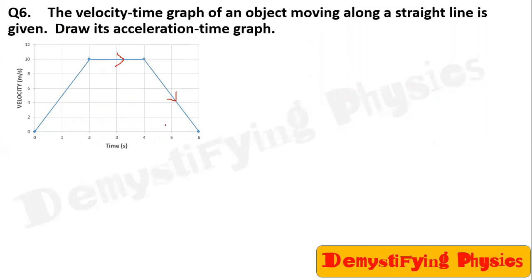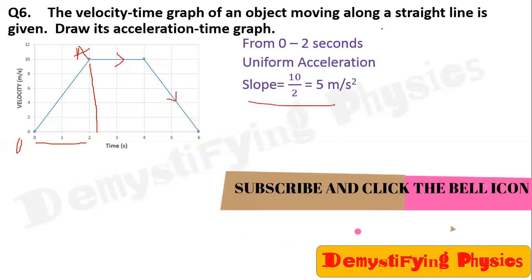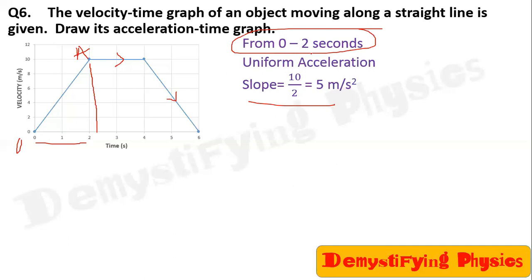Now find out the acceleration for different portions. For part OA, what is the acceleration of the body? Find slope perpendicular upon base. What is perpendicular? 10, base is 2. So 10 by 2, 5 meter per second square. This is the acceleration between 0 to 2 seconds.